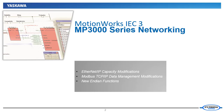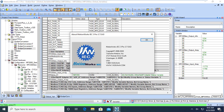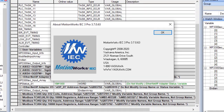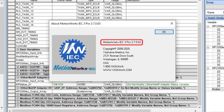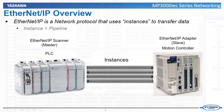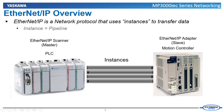Now let's look at this in a little more detail. For my examples, I will be using MotionWorks IEC version 3.7. Let's start with a quick overview of the Ethernet IP protocol.